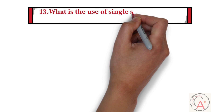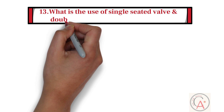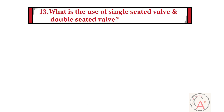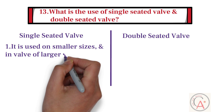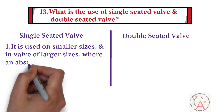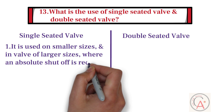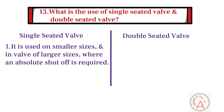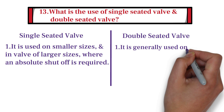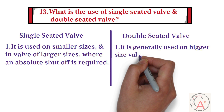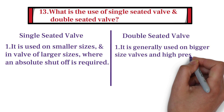Thirteenth question: what is the use of a single-seated valve and double-seated valve? The single-seated valve is used on smaller sizes and in larger sizes where an absolute shut-off is required. Double-seated valves are generally used on bigger size valves and high-pressure systems.